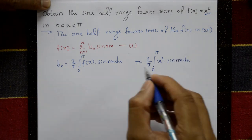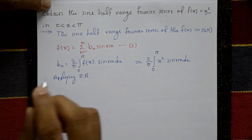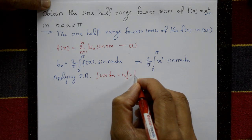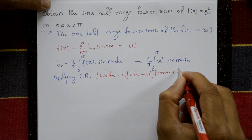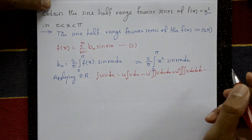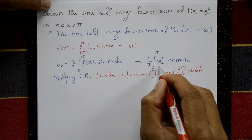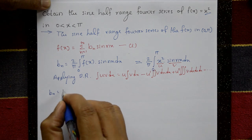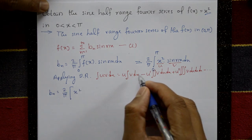Now applying Bernoulli's rule. Bernoulli's rule states: integration of u·v dx = u·(∫v dx) − u'·(∫∫v dx dx) + u''·(∫∫∫v dx dx dx) − ... and so on, with alternating plus and minus signs. Here u is a polynomial and v is a trigonometric function.